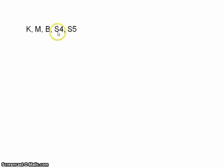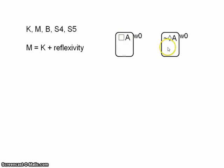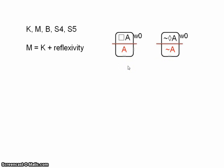There are many other normal modal logics, but these are the five most important ones. Let's consider K and M. How did we define M? All we did was take K and make the accessibility relation reflexive. In other words, from formulas of the form 'necessarily A' and 'not possibly A', we can derive A and not-A in the same world — in the very same world. That's the only change.